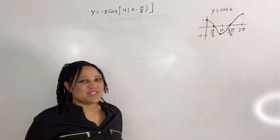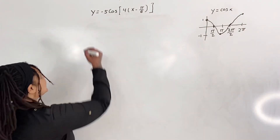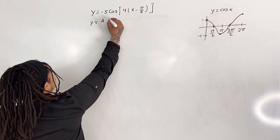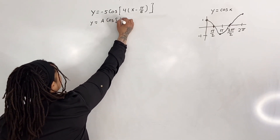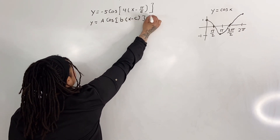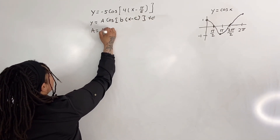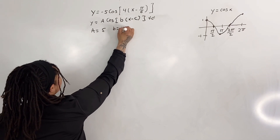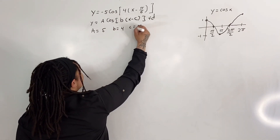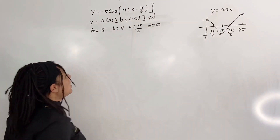That is your original graph. Our function is in the form y equals a cosine of b times x minus c, plus d. Where a is equal to 5, b is equal to 4, c is equal to pi over 6, and d is equal to 0.